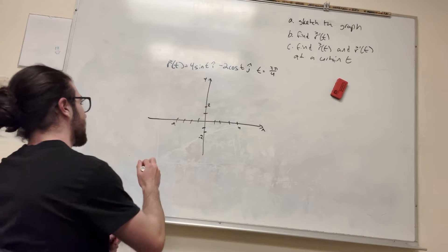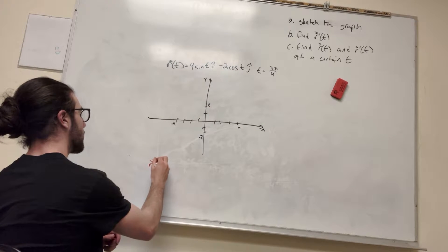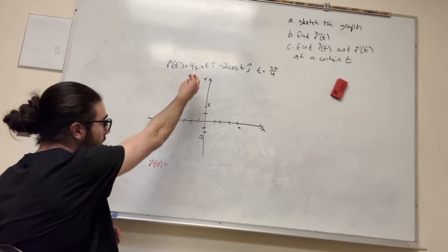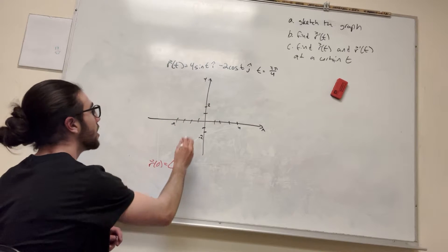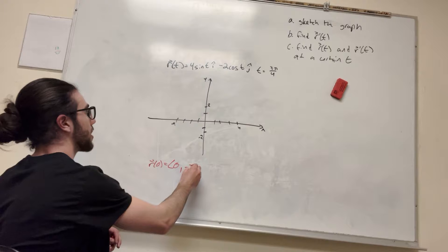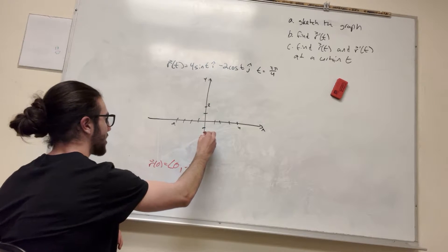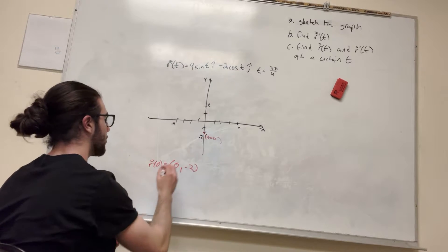So let's say t is equal to 0. So sine of 0 is 0, and then this is going to be negative 2, because cosine of 0 is 2, so this is where t is equal to 0, this is our starting point.